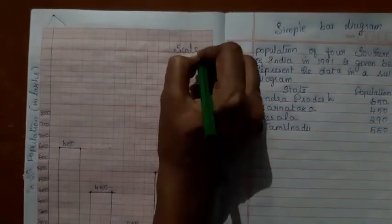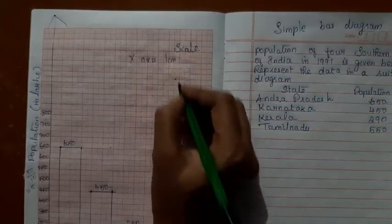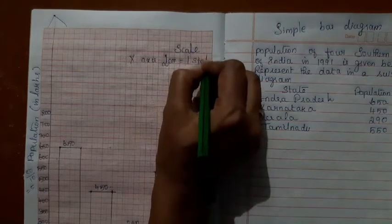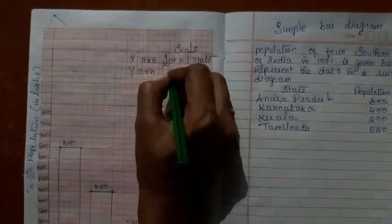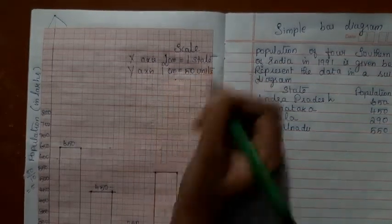Now, scale. X-axis. 2 cm equal to 1 state. Y-axis. 1 cm equal to 50 units or 50 people.